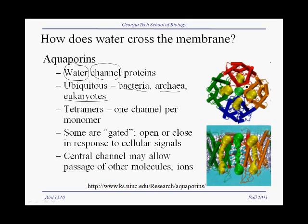Aquaporins assemble in the lipid bilayer membrane as a tetramer — four identical polypeptides that assemble in the plane of the membrane. Shown here is a top-down view where each polypeptide chain of the tetramer is shown in a different color. The little yellow blobs are the actual water channels within each monomer. These channels can be gated, meaning they open or shut in response to cellular signals. Some tetramers form a channel in the middle — a fifth channel — that allows the passage of other molecules. A side view shows the water channels and the central channel going all the way across the lipid bilayer.